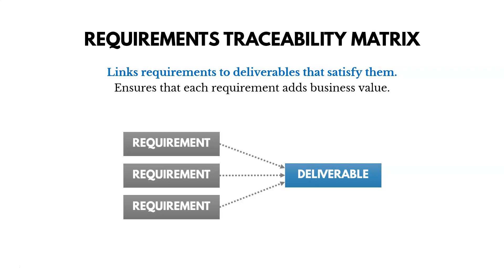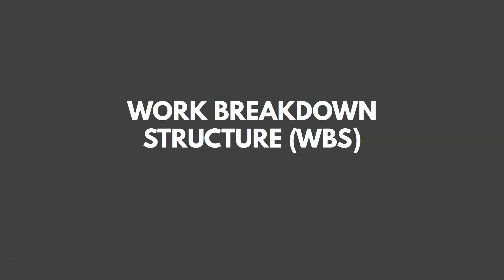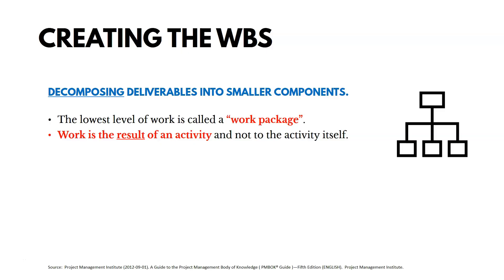After we collect requirements and define the scope, we create the Work Breakdown Structure, or WBS. This takes our scope and decomposes it into smaller components to make it easier to manage down the road. The WBS is often represented as a hierarchy — either as a visual chart or through indentation in a Microsoft Project or Excel file. The lowest level of work in a WBS is called the work package. The work package is the result of an activity, not the activity itself — I like to think of work as a noun.